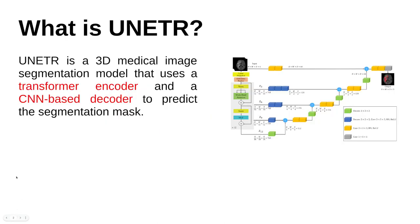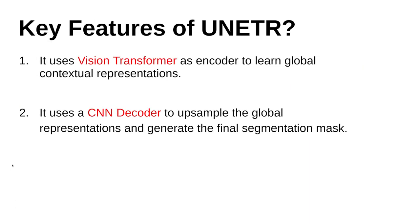Our first question is: what is UNETR? It is a 3-dimensional medical image segmentation model that uses a transformer encoder and a CNN-based decoder to predict the segmentation mask. In simple terms, UNETR is basically Vision Transformer plus CNN decoder.